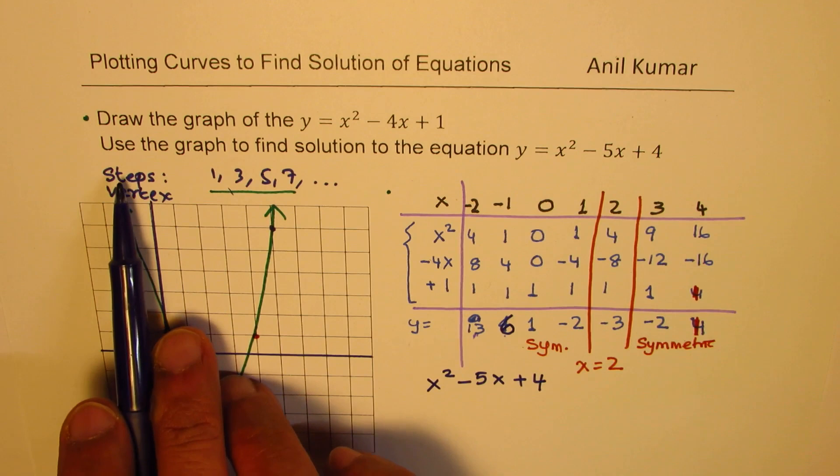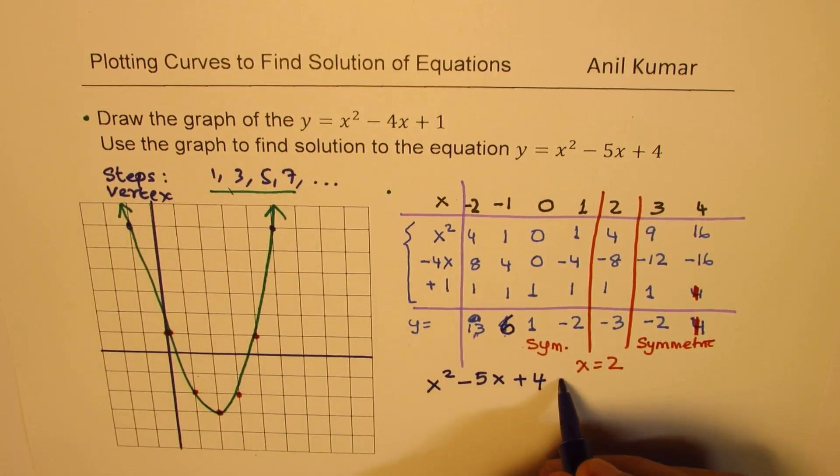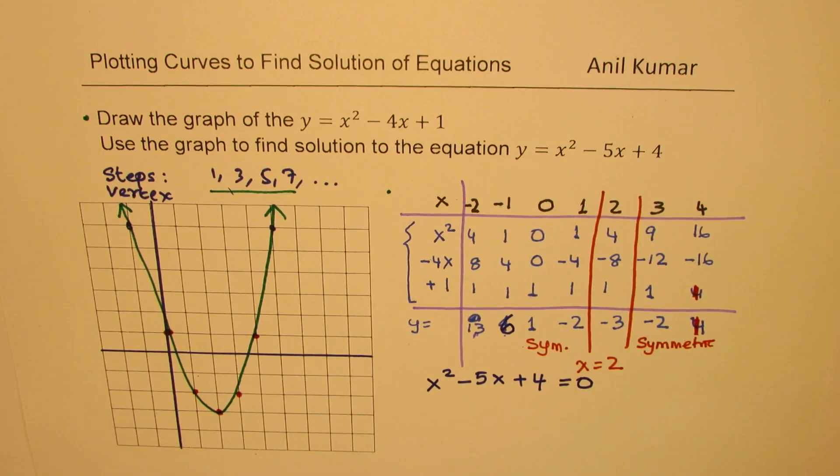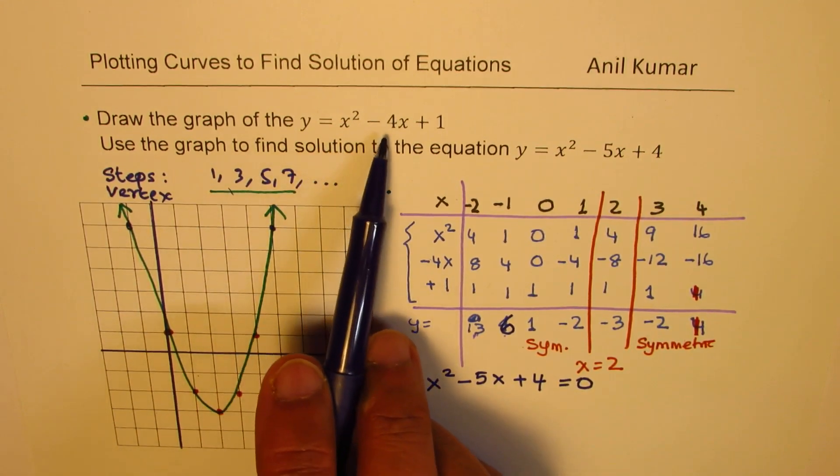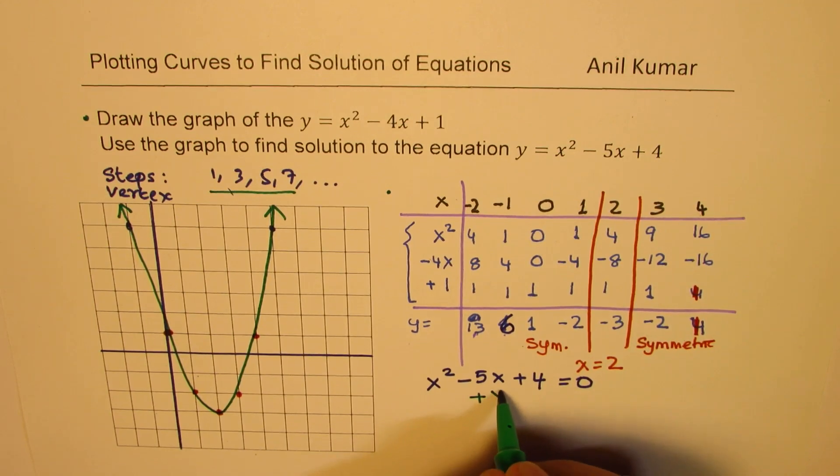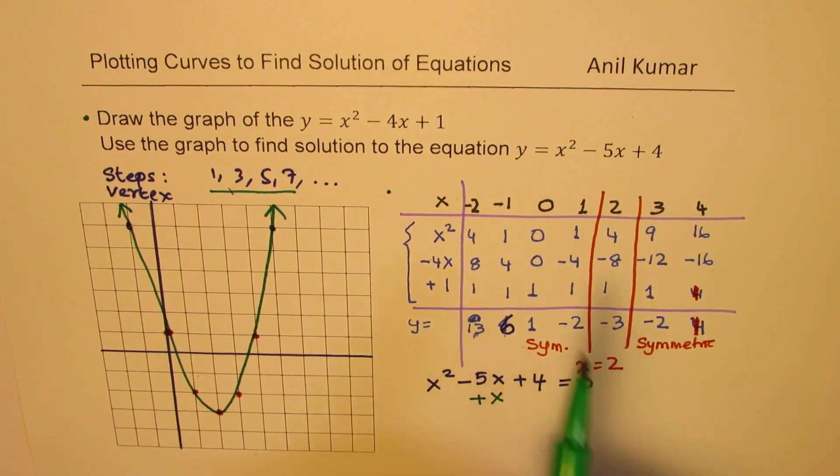When we say solution, that means we have to equate this to 0. Is it clear to you? So we need to find solution of this equation. We have graph of x squared minus 4x plus 1. So how do I get minus 5x here? To get minus 5x, I have to add x here, right? So I get minus 5x. And to get 4 here, I have to take away 3.